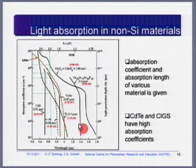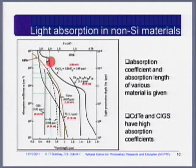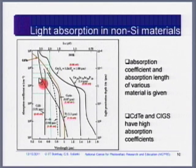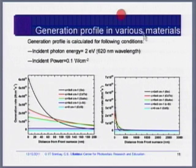This graph shows various thin film materials: gallium arsenide, cadmium sulphide, amorphous silicon, germanium, and cadmium telluride. Most of these materials have absorption coefficient higher than 10⁴, which is what is required. Absorption coefficient greater than 10⁴/cm is required for thin film solar cells, so that absorption length is only about 1 micron.